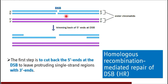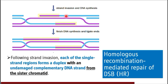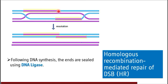After cutting back the 5' ends at the double strand break, the next step is forming a duplex with an undamaged complementary DNA strand from the sister chromatid. We now have a good-quality homologous DNA template on which the repair process can initiate. DNA synthesis starts from the 3' end of the double strand break and continues to reach the other end. Following DNA synthesis by DNA polymerase, the ends are sealed using DNA ligase. This was homologous recombination mediated repair of double strand breaks.